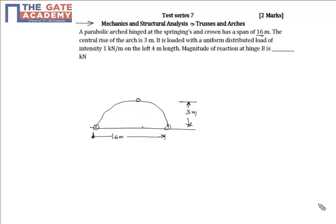It is loaded with a uniformly distributed load of intensity 1 kN per meter on the left 4 meter length. For this meter it is uniformly loaded. This is 4 meters and its intensity is 1 kN per meter.